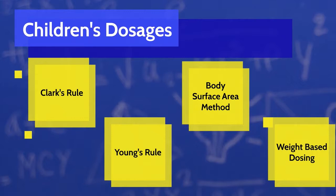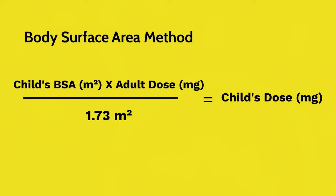Next, we will discuss the body surface area method. This method uses the child's body surface area, or BSA, in meters squared times the adult dose in milligrams divided by 1.73 meters squared, the average BSA of an adult. Meters squared appear in both numerator and denominator and cancel out, leaving milligrams as the final units. This is another proportion: the child's BSA over the adult BSA times the typical adult dose equals the relatively scaled child's dose.